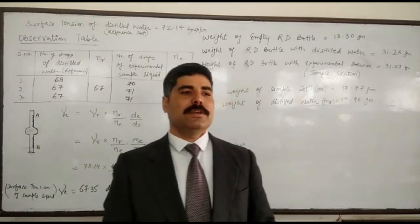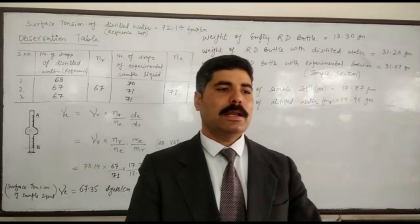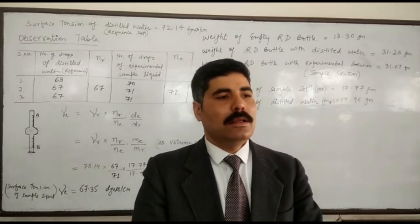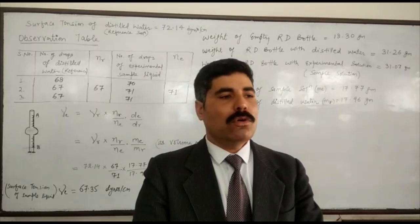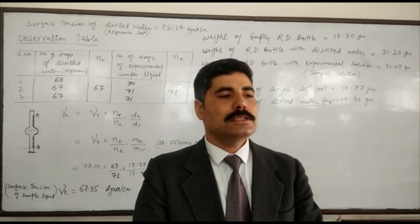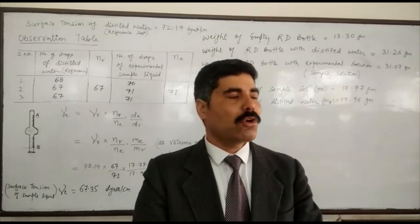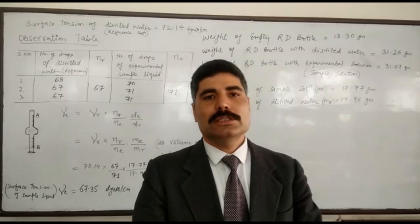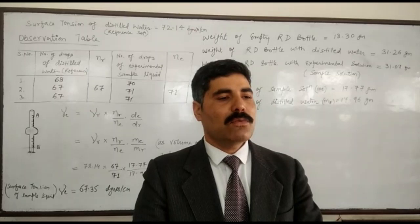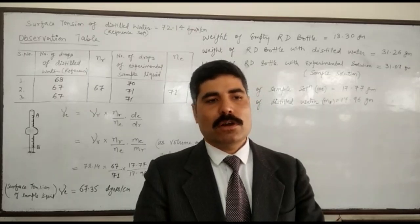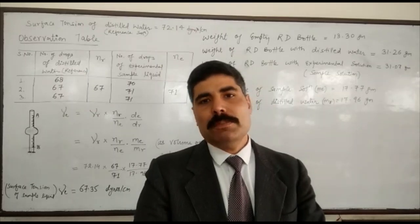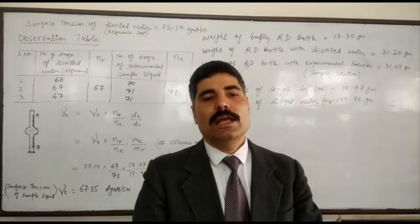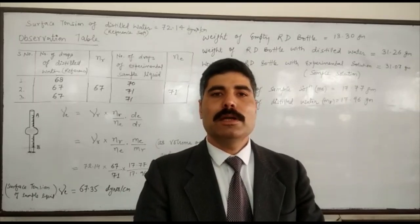The stalagmometer is filled with the sample liquid up to mark A, and the liquid is allowed to flow until the lower mark B is reached. The number of drops are counted carefully. This procedure is then repeated with the reference liquid, that is distilled water, to get concordant readings for both the reference liquid and the experimental solution.